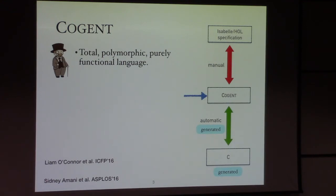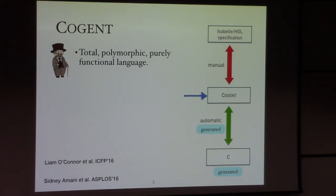The good thing is that the Cogent compiler generates tons of automatic proofs showing the correctness of the bottom part of the code. So even though the effort in writing Cogent is roughly the same as writing C, you get automatic verification alongside it. Thank you.